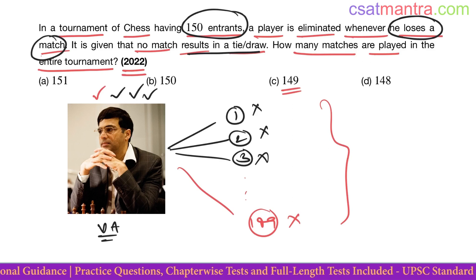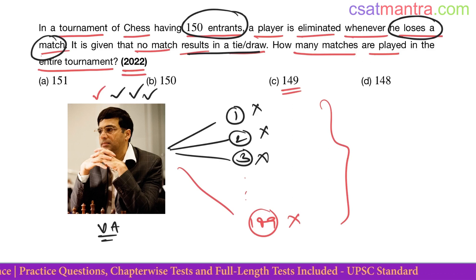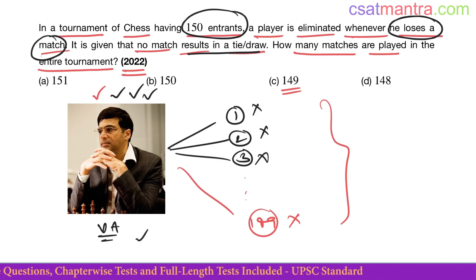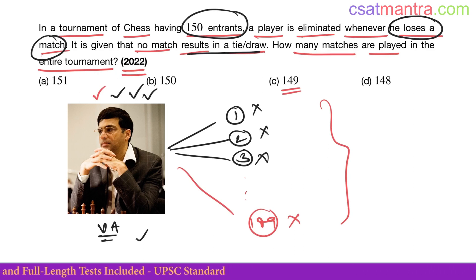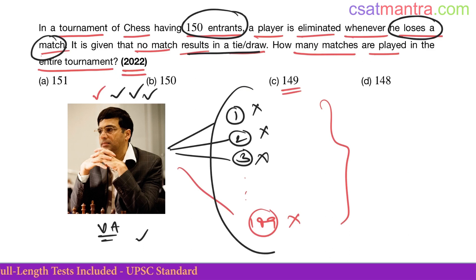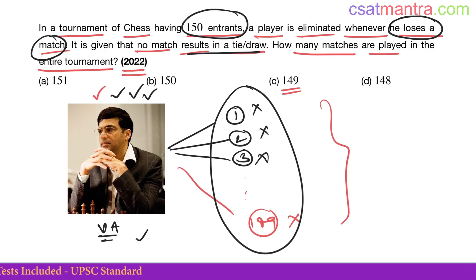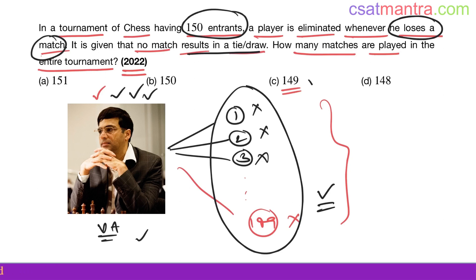To simplify the problem, without loss of generality, we take one person who wins all the time, no matter with whom he plays. So he will be playing 149 matches — he has to defeat 149 members. Therefore, 149 matches is the answer.